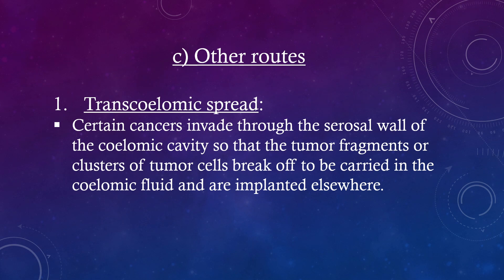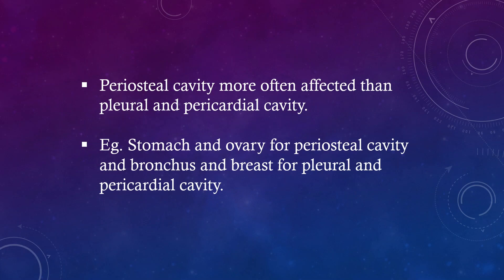Other routes. Transcelomic spread: certain cancers invade through the serous cell wall of the coelomic cavity so that tumor fragments or clusters of tumor cells break off, are carried in the coelomic fluid and implanted elsewhere. The peritoneal cavity is more often affected than the pleural and pericardial cavities. Examples include stomach and ovary for the peritoneal cavity, and bronchus and breast for the pleural and pericardial cavities.